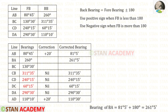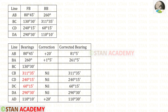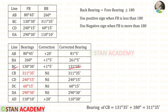Now let us find the correction for BA: 261 degrees 5 minutes minus 260 degrees gives us 1 degree 5 minutes — a positive value, so the correction is positive 1 degree 5 minutes. Since bearings BA and BC are taken from the same station B, the same correction should be applied to BC also. When we apply the correction we get 131 degrees 35 minutes for BC. Now using this forebearing of BC we can find the backbearing CB. Since it is less than 180 we use the positive sign, giving us 311 degrees 35 minutes.